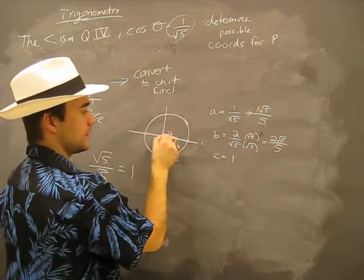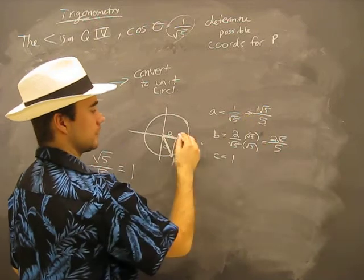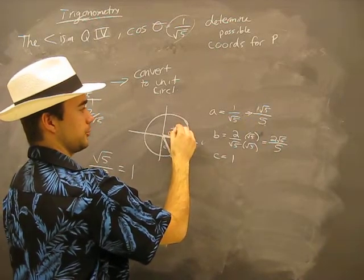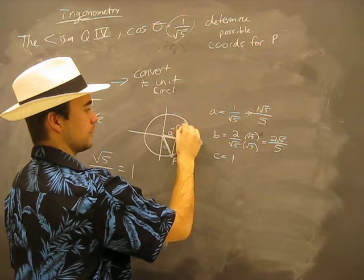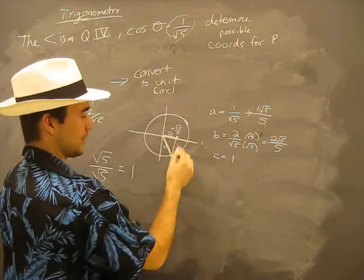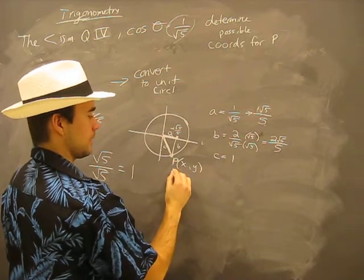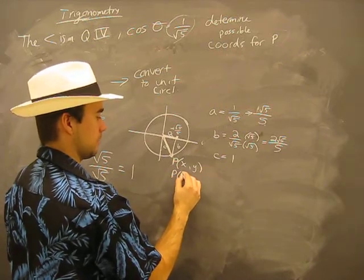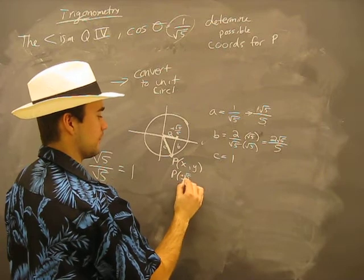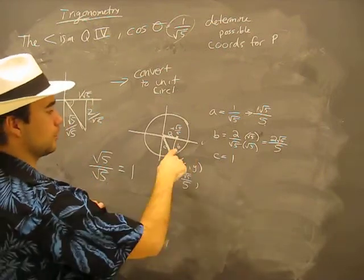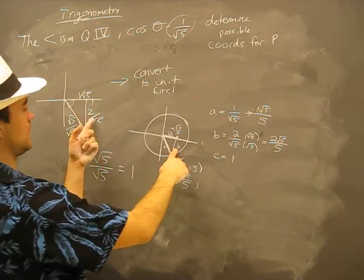So what does this mean? Well, the distance from here to here is root 5 over 5, so that means our x-value is positive root 5 over 5.